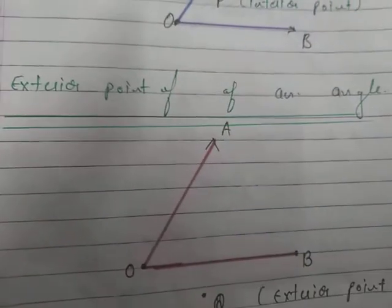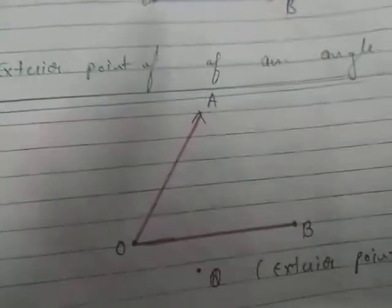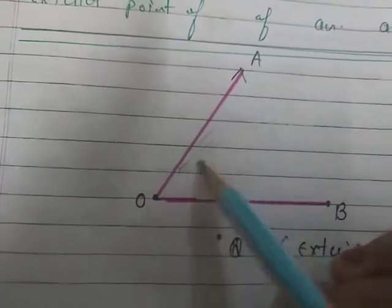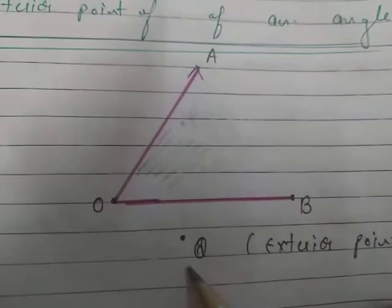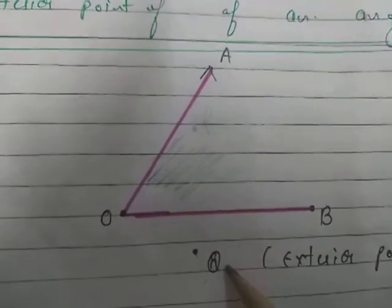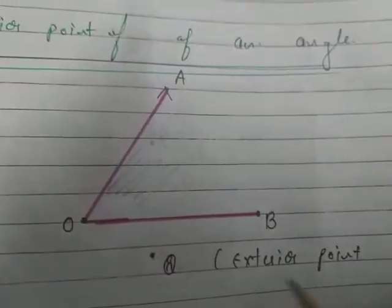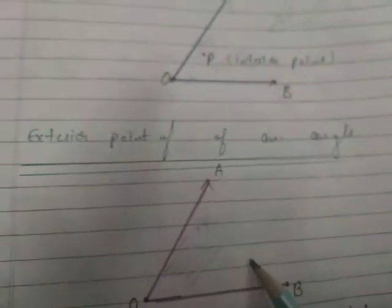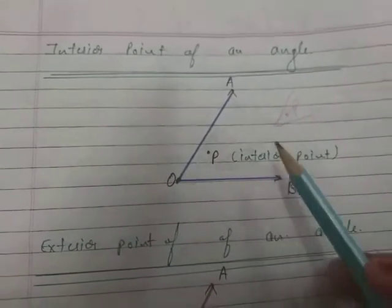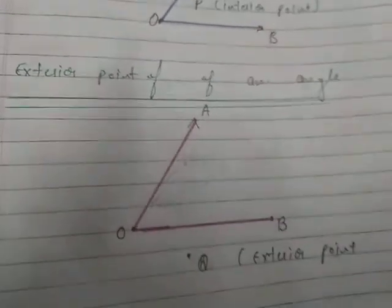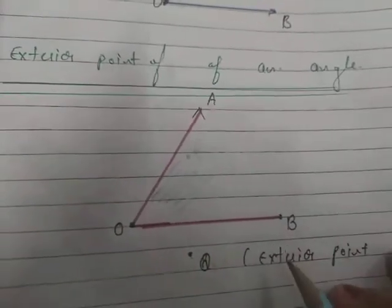Now let's look at the exterior point of an angle. For angle AOB, the interior part is inside the two rays. But if we place a mark outside the angle, like point Q, then point Q is an exterior point of the angle. So any mark placed inside is an interior point, and any mark placed outside is an exterior point.